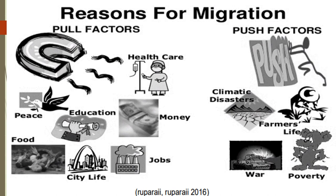Here are the reasons for migration. In the pull factors, some people move because they are in search of work or economic opportunities, health care, peace, good education, or a city life. In the push factors, people move to escape climatic disasters, a farmer's life, poverty, war, conflict, persecution, terrorism, or human rights violations.